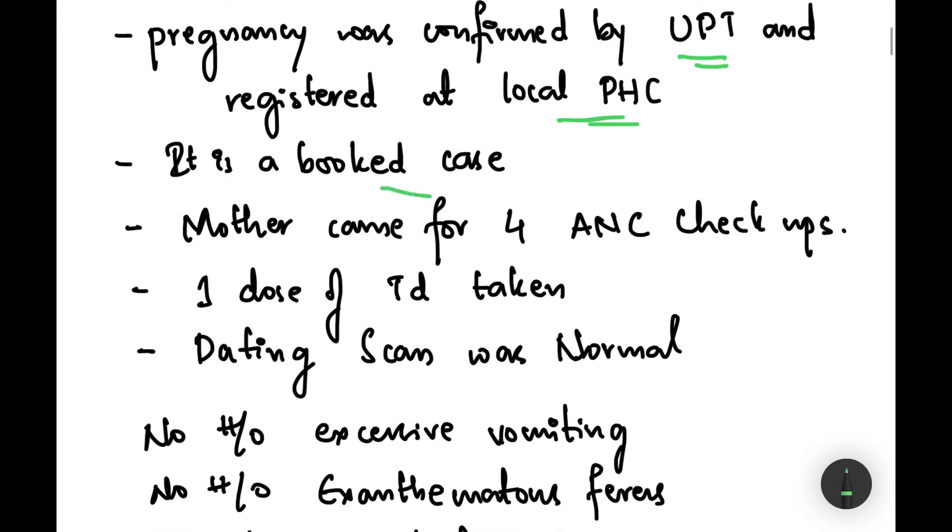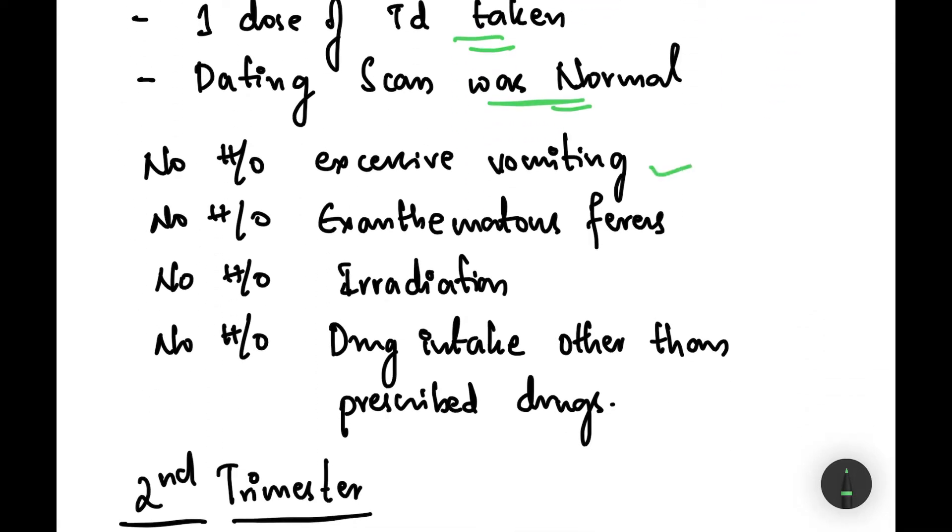It is a booked case and mother came for four ANC checkups. The first dose of TD was taken and dating scan was found to be normal. There was no history of excessive vomiting, no history of exanthematous fevers, no history of irradiation, or no history of drug intake other than the prescribed drugs.